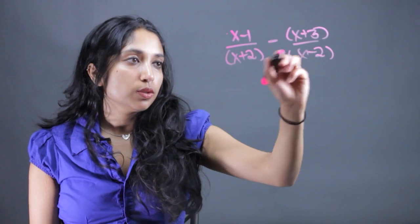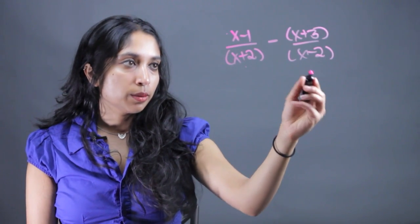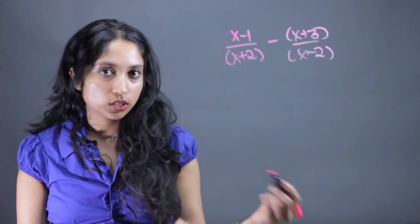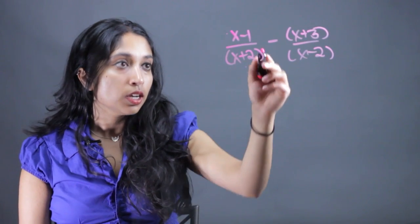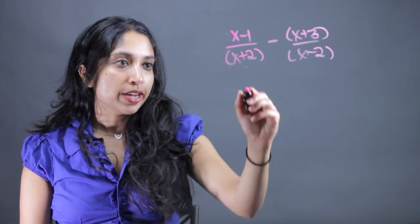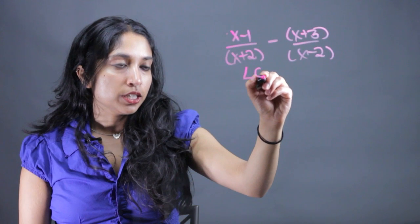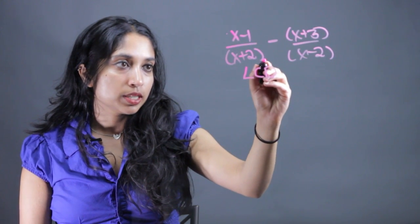When dealing with this, you might think I don't know how to combine these, these two are different. You want to use the same rules you would with regular fractions. When you're adding and subtracting fractions, you need to change it to the lowest common denominator.